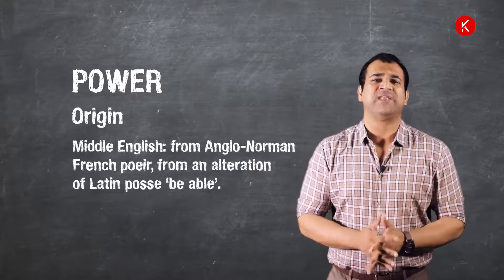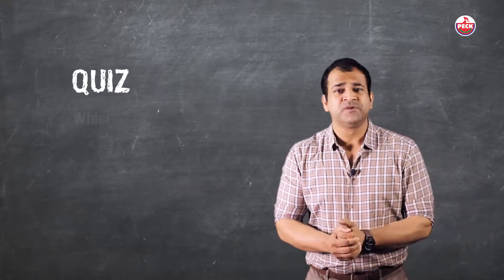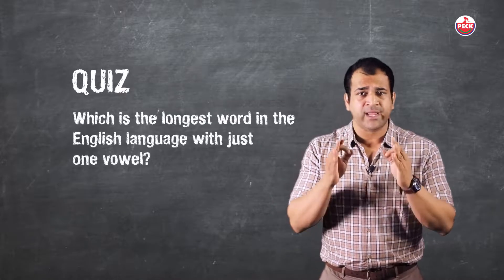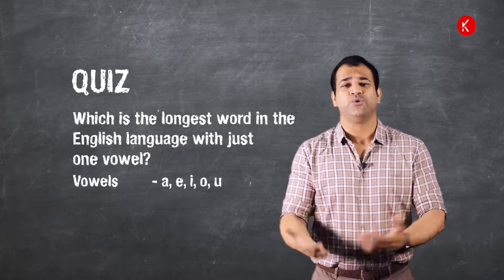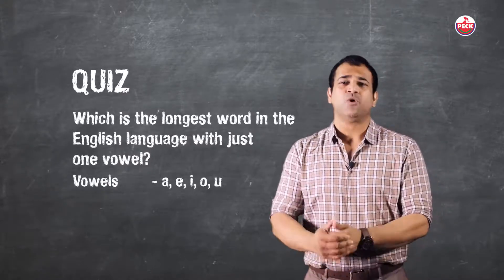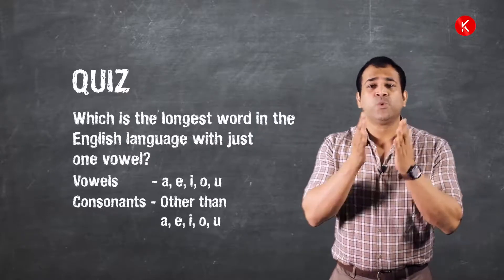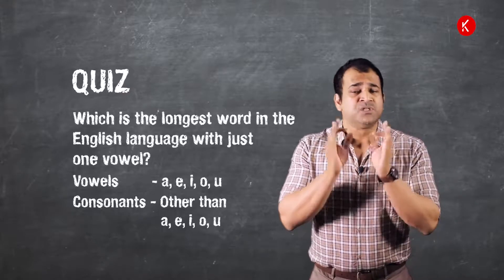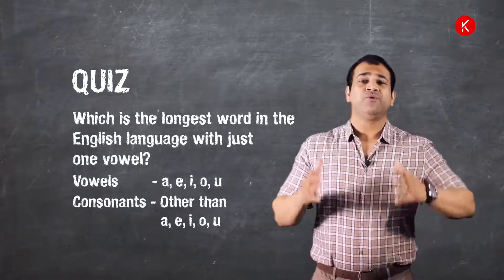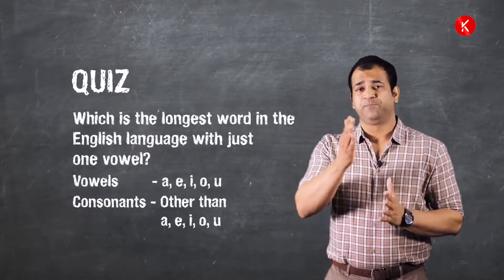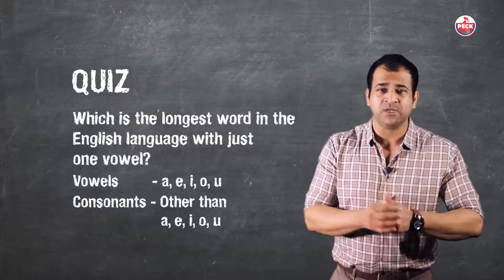Have a quiz for you. Which is the longest word in the English language with just one vowel? What is a vowel? A, E, I, O, U. So examples of vowel. What is a consonant? Anything other than A, E, I, O, U are consonants. To form a syllable, the question on the quiz one more time: Which is the longest word in English language with just one vowel? I'll give you a tip: it is the synonym of the word power.